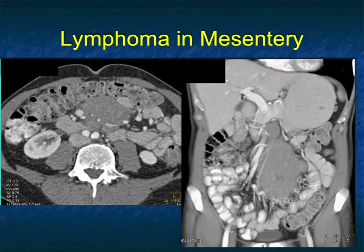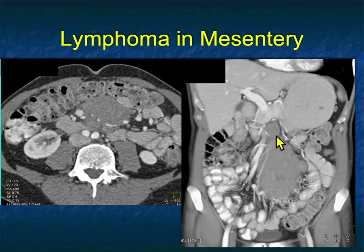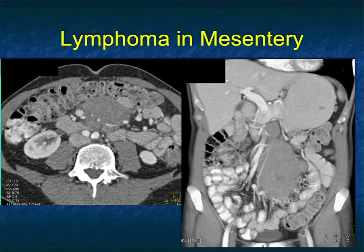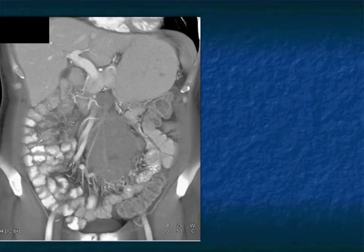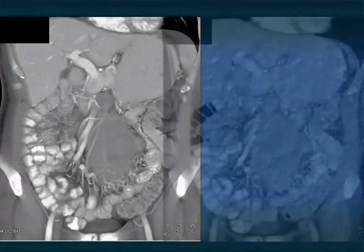To complete the differential, consider lymphoma — a large soft tissue mass in the root of the mesentery with vessel displacement and some encasement, but no calcification. The only time calcification is seen with lymphoma is after therapy such as radiation. In under 30% of cases of sclerosing mesenteritis and carcinoid, calcifications may not be seen, so vessel relationships become the key distinguishing finding for lymphoma. This is nicely seen on volume rendered images.